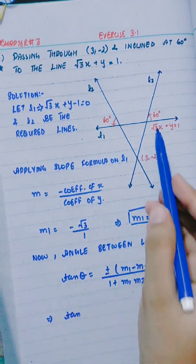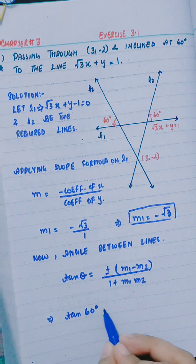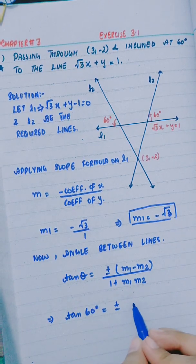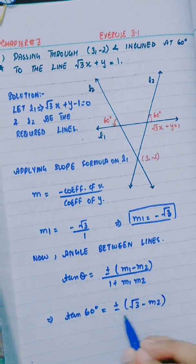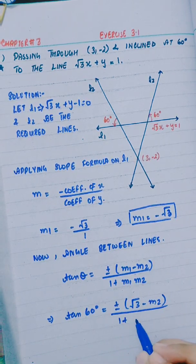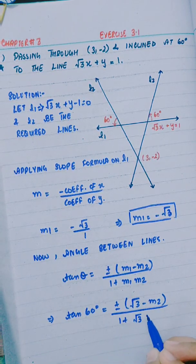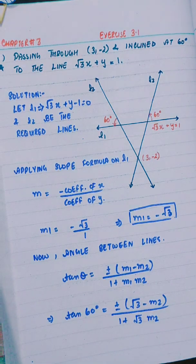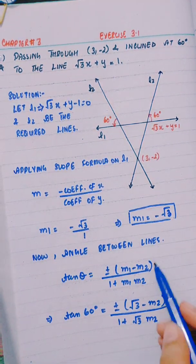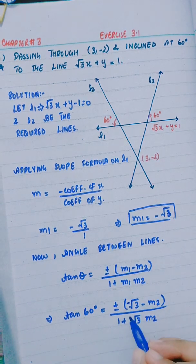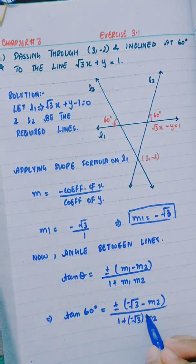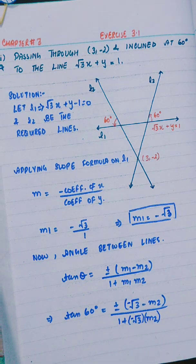Here θ is 60 degrees. tan 60° = ± (-√3 - M2)/(1 + (-√3)M2). This is M1 = -√3, so -√3 - M2 divided by 1 - √3M2.